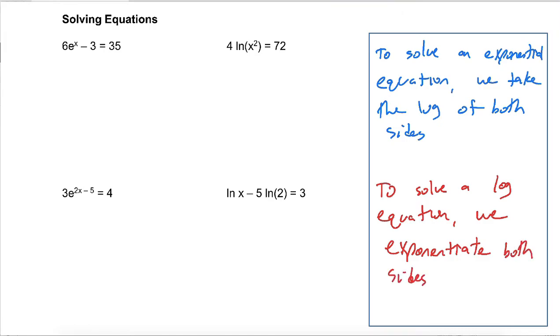But one thing to remember is you always have to isolate first, so it doesn't help to exponentiate both sides or take the log of both sides until you've isolated the exponential you're trying to undo, or isolated the log you're trying to undo. So what I'm going to do first here, 6e to the x minus 3 equals 35, is start by isolating that e to the x.